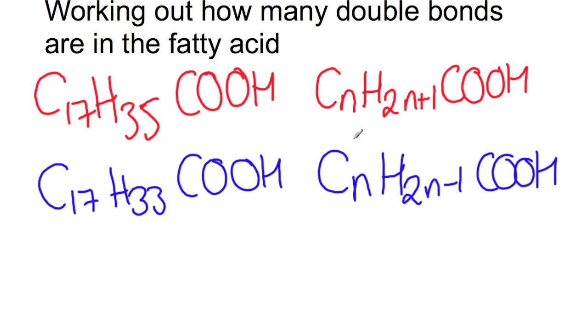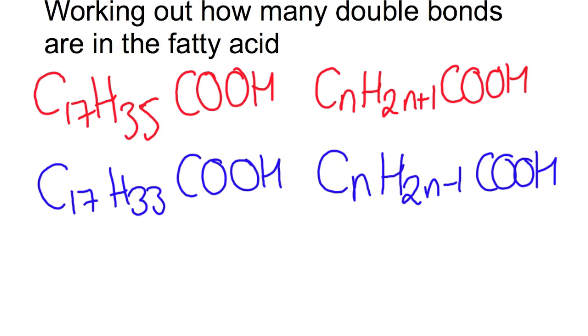If you take off another two hydrogens to create a second double bond, then you would end up with a general formula of CNH2N minus 3COOH. So you can see how the pattern would continue from there. So if you start from your fully saturated general formula and then you can work out what has been removed, and that will tell you how many double bonds. So you remove two hydrogens for each double bond that has been formed.